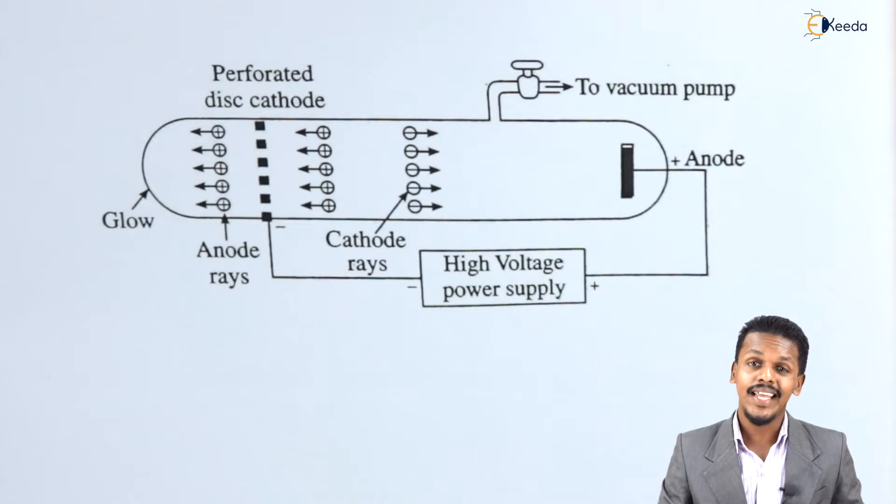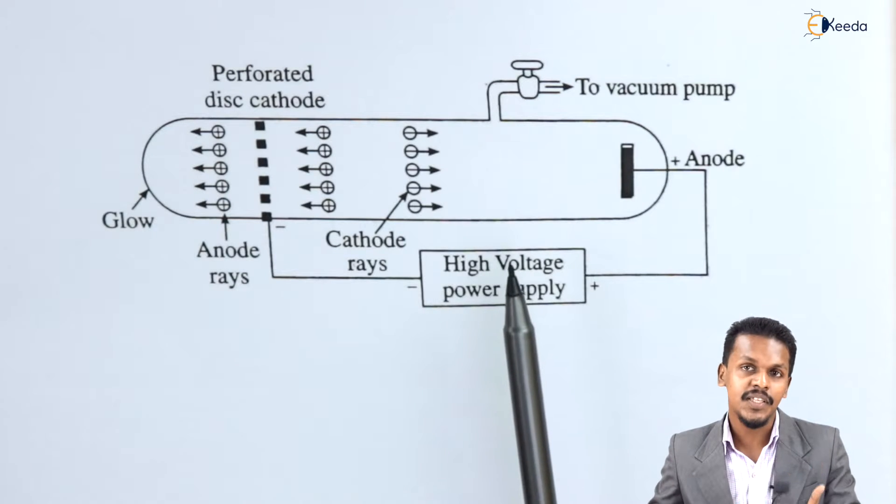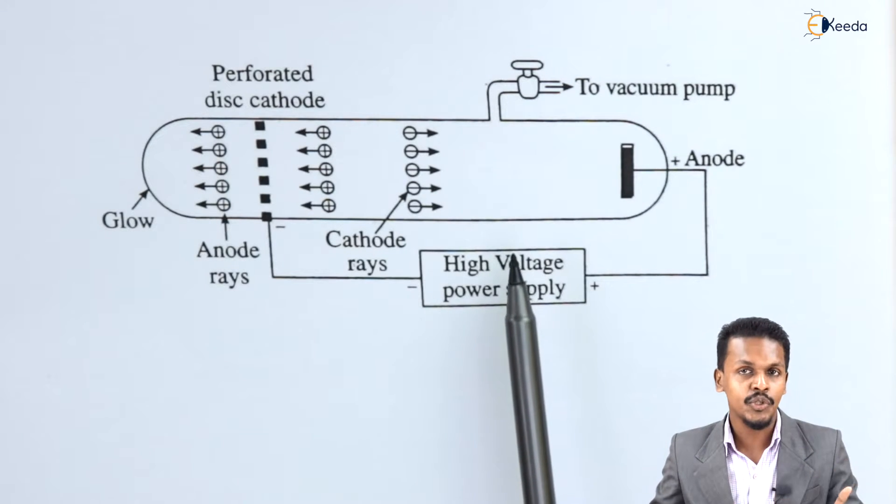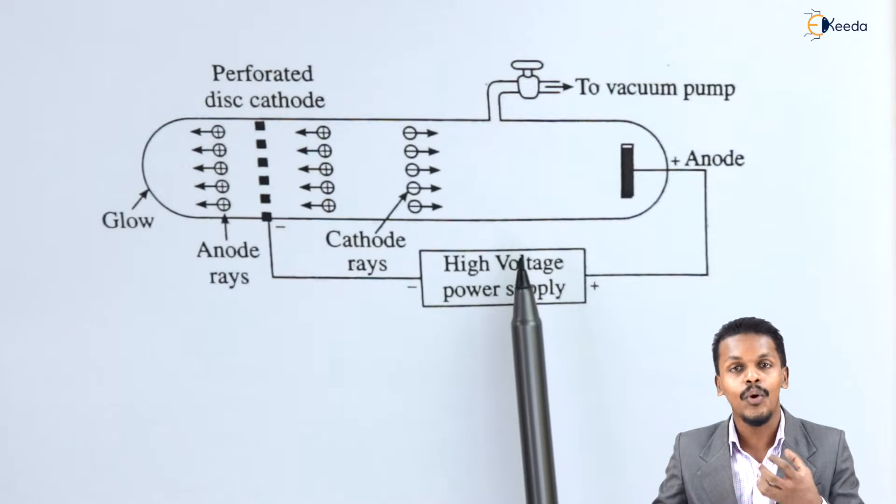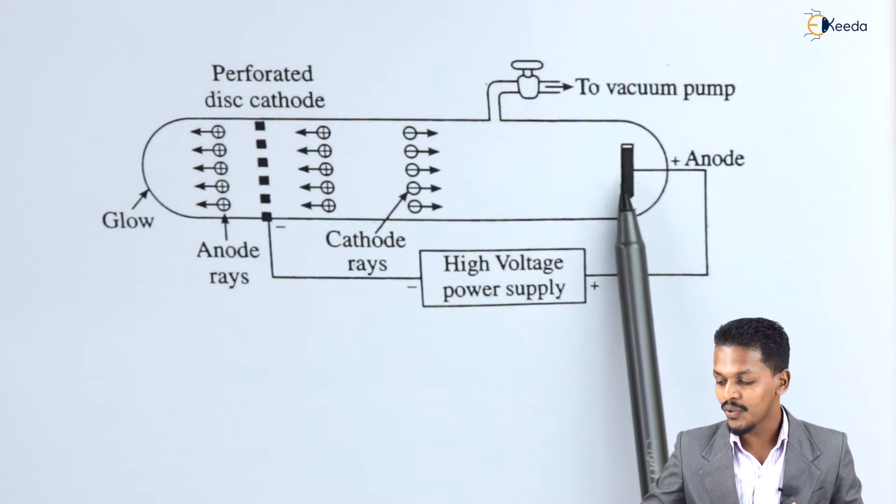Anode rays, also known as positive rays or canal rays, can be understood with the help of this diagram. This diagram is very much similar to the discharge tube from which we got to know about the cathode rays.